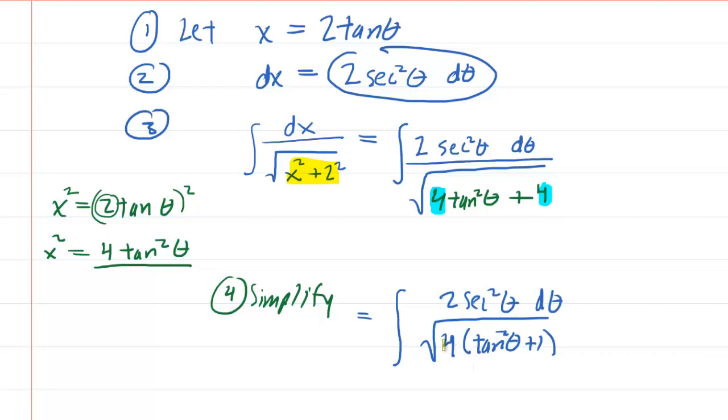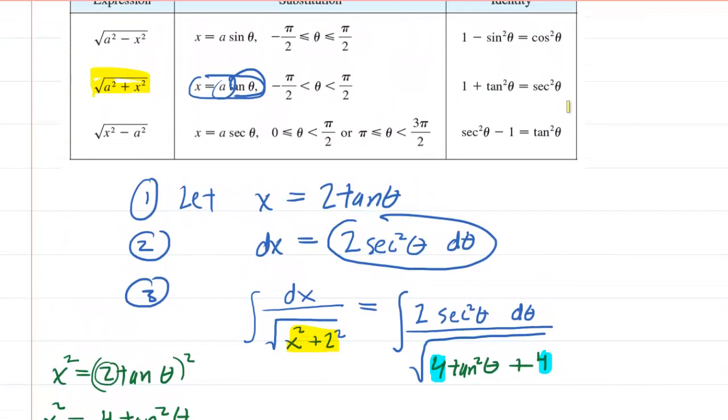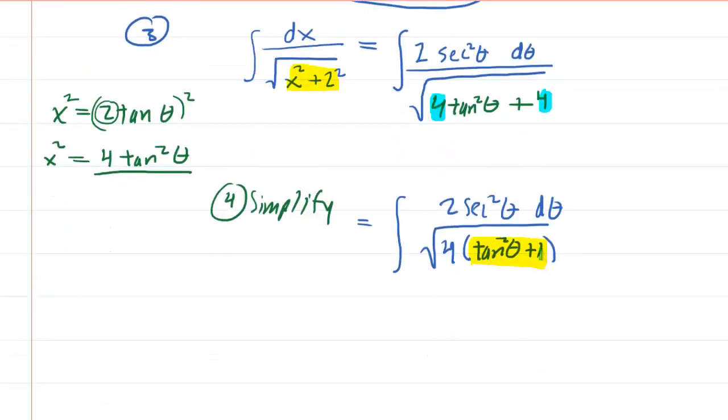Then what happens in these problems is once you factor out your constant, in this case 4, you're going to be left with an expression inside the parentheses that will be substituted with an identity. And we go back to our table and we can see that 1 plus tangent squared theta is equivalent to secant squared of theta. So this 1 plus tan squared of theta right here will be substituted with the secant squared of theta.